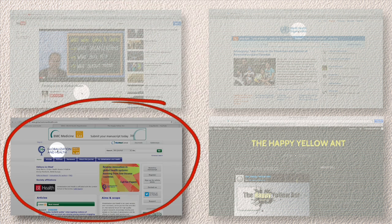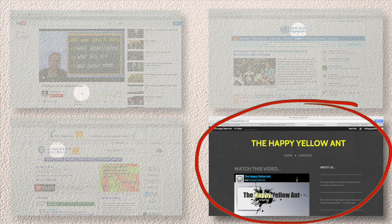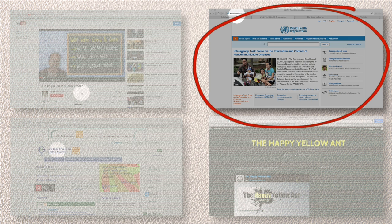You can get more information on this and other topics at globalizationandhealth.com. Globalization and Health is an open access, peer-reviewed online journal. And of course, thanks very much to thehappyyellowant.com for providing the graphics. These facts and figures are available at the World Health Organization's web page, www.who.int.